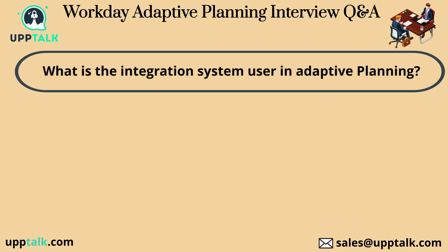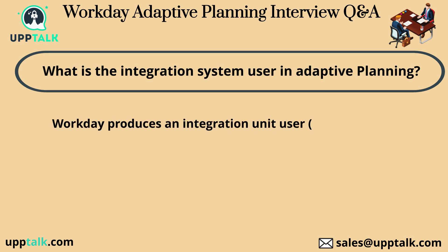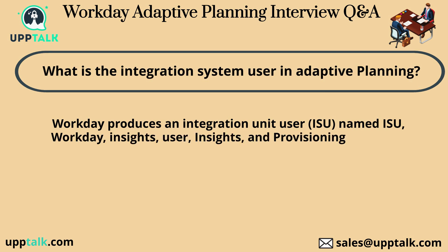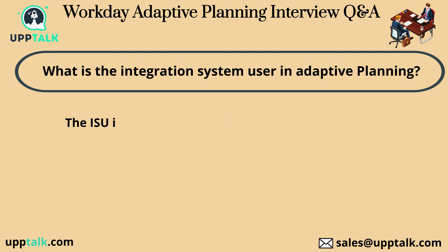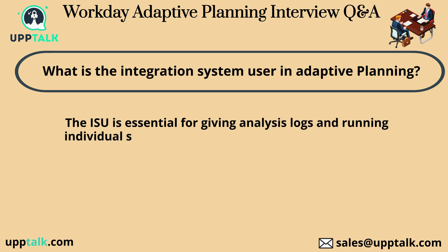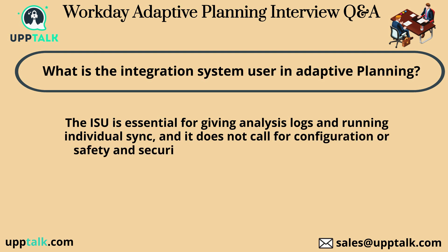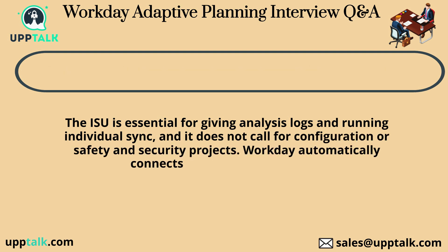What is the integration system user in Adaptive Planning? Workday produces an integration system user (ISU) named ISU Workday Insights User Insights and provisioning when you successfully complete the enable user sign-on for adaptive planning task. The ISU is essential for giving analysis logs and running individual sync, and it does not require configuration or security projects. Workday automatically connects the ISU to user sign-on.